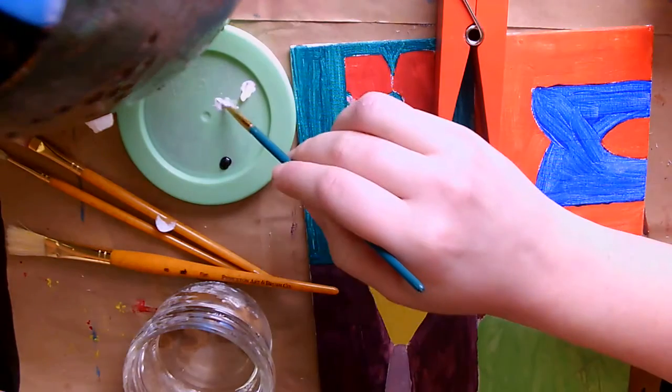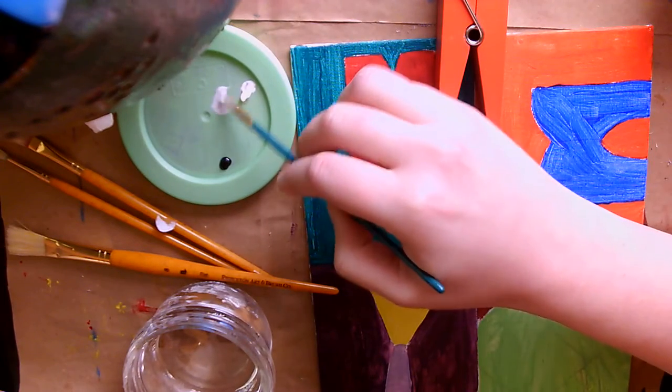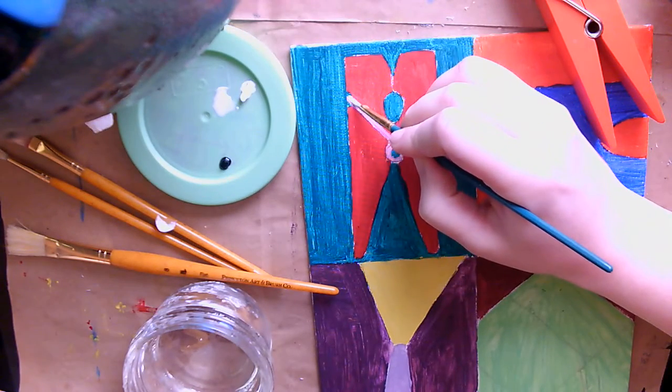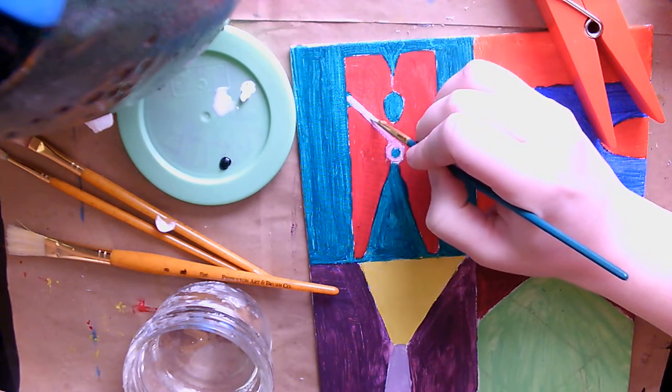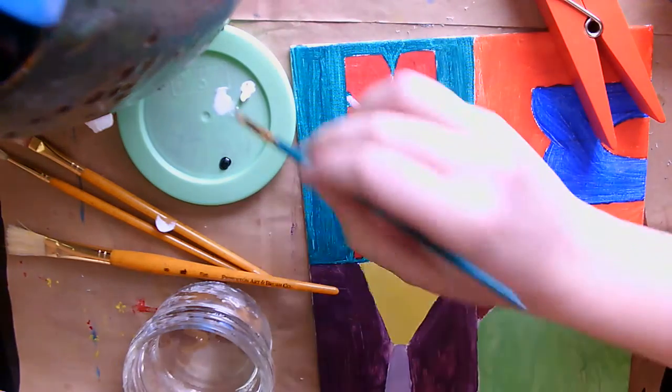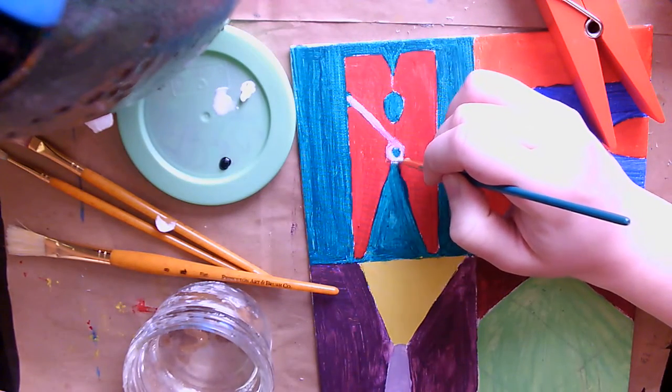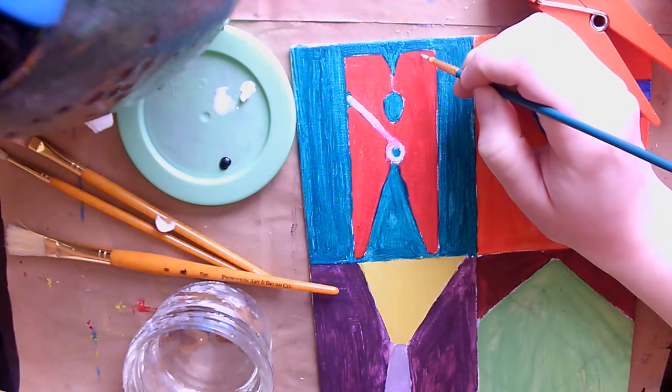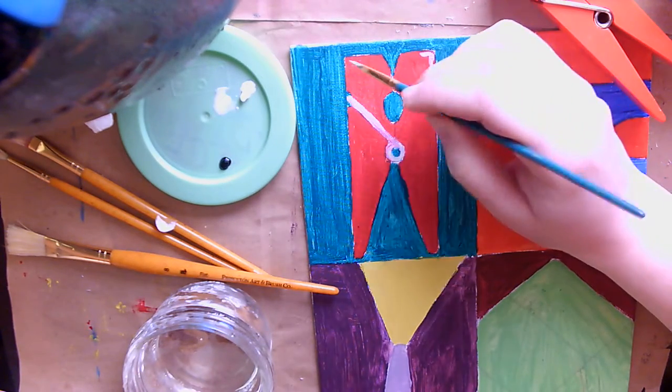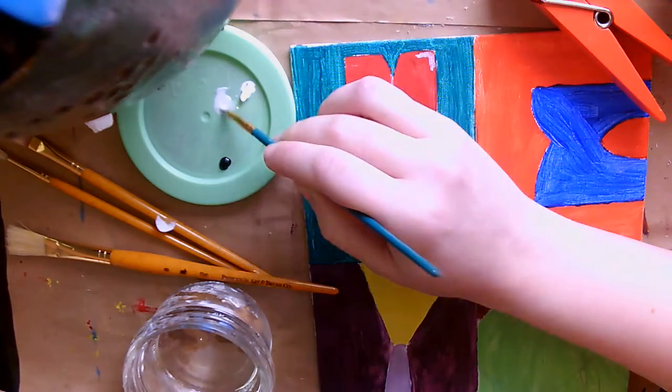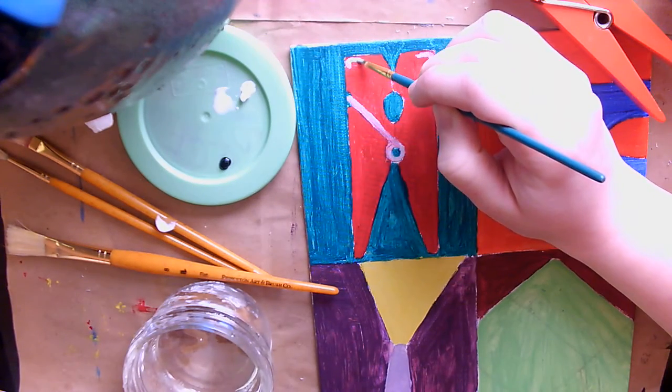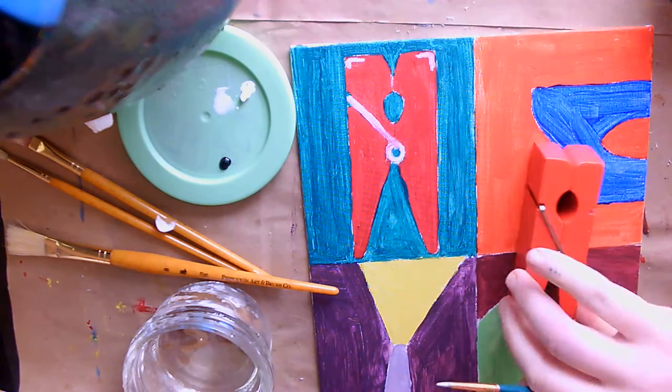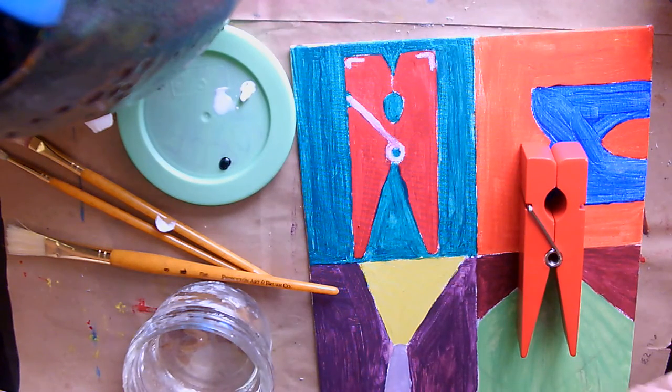And then I'm going to just start to put some highlight on certain parts where I see the sun or the light source hitting my object, just to kind of give it a little more dimension.